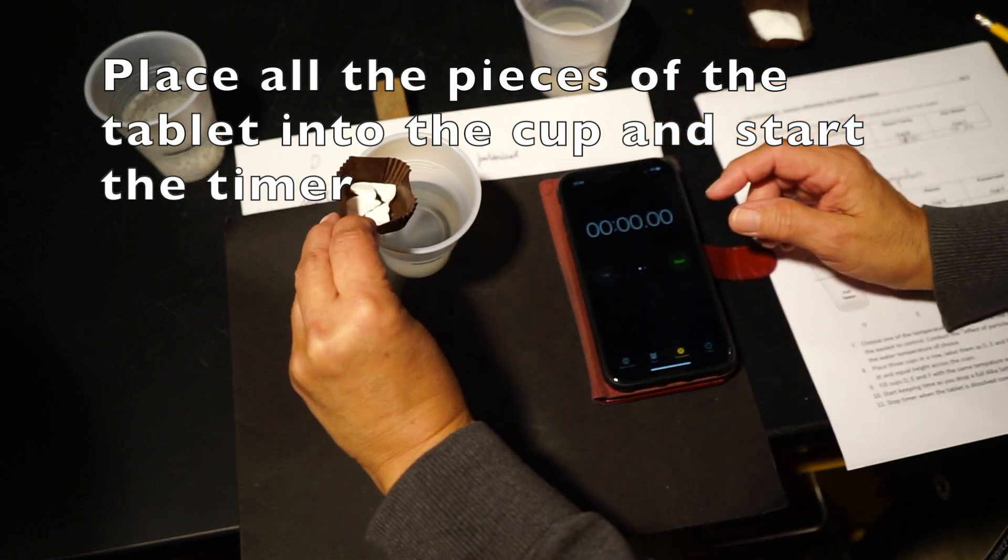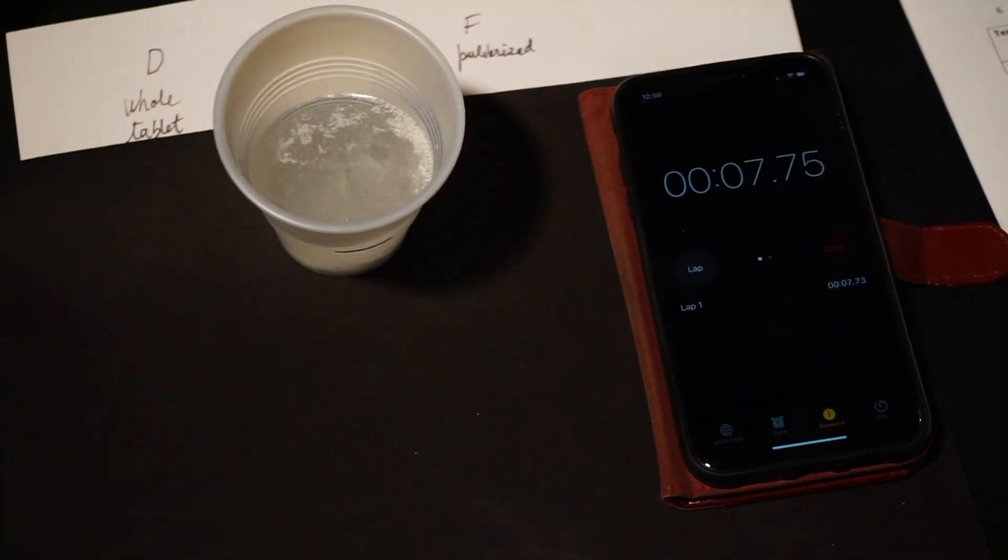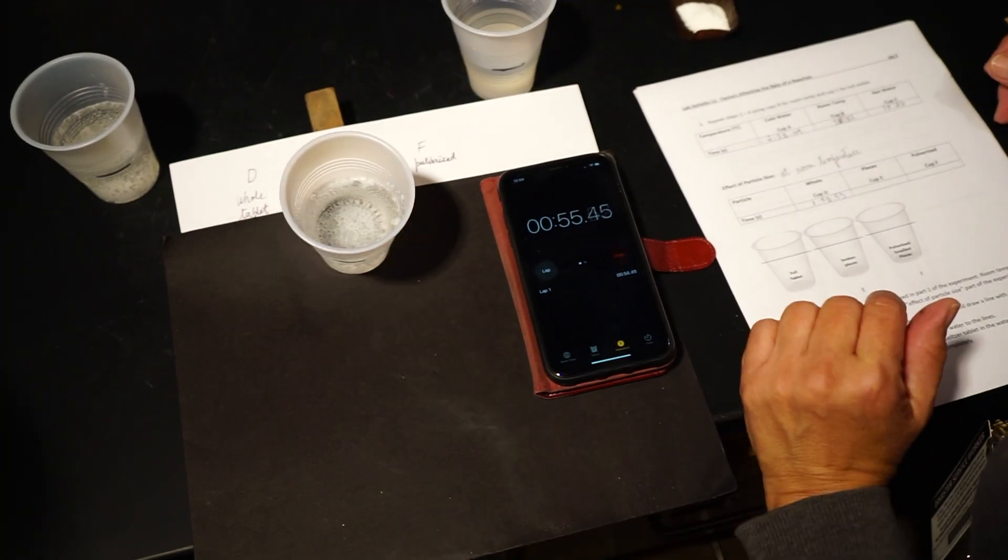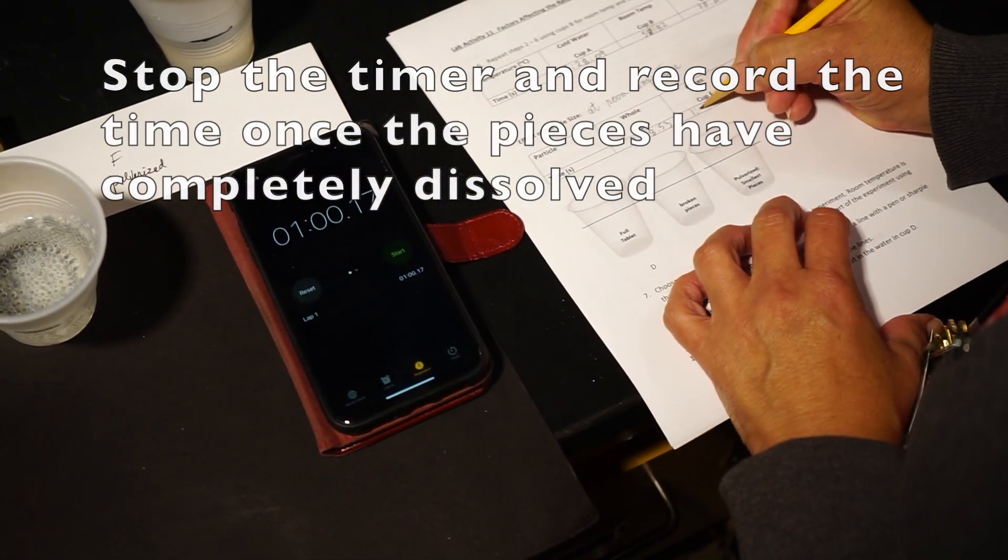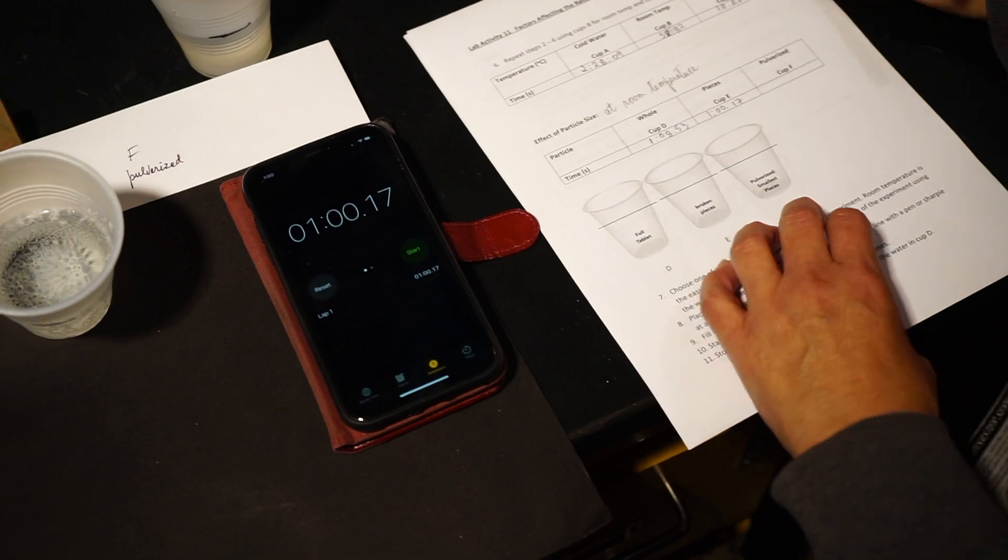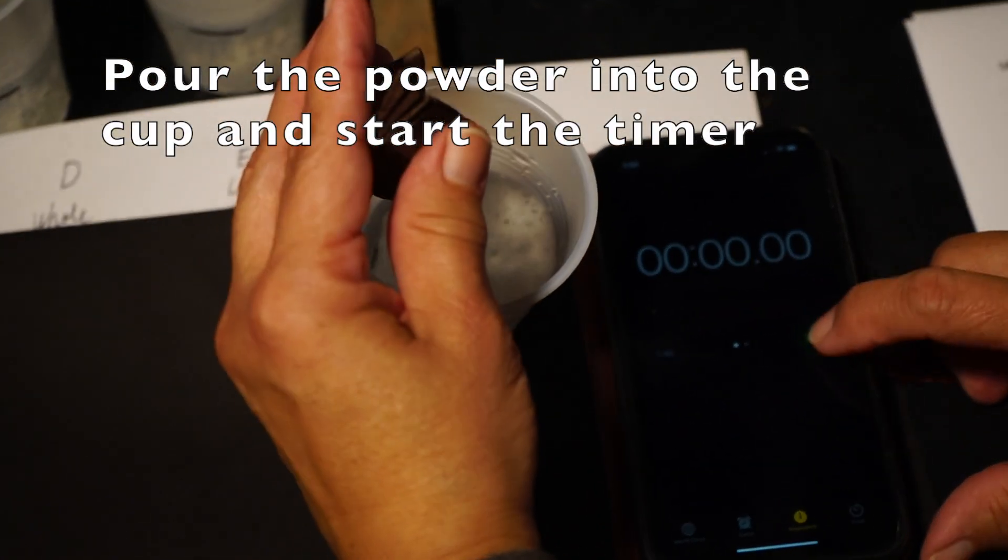For the second, place all the pieces of the tablet into the cup at the same time and start the timer. Stop and record the time once all the pieces have dissolved. For the final cup, pour the powder into the cup and start the timer.